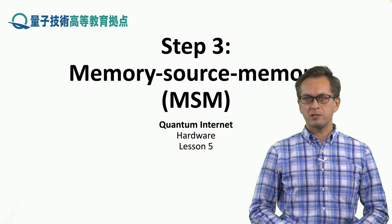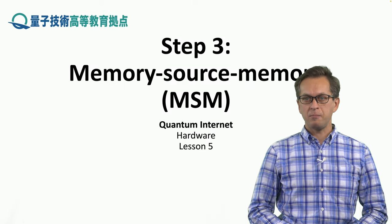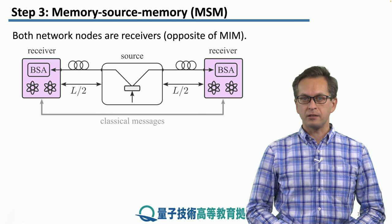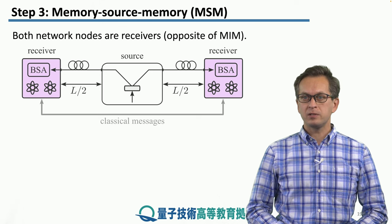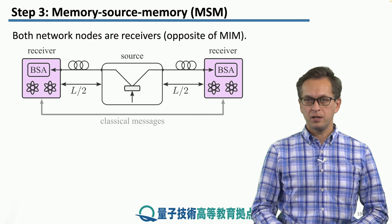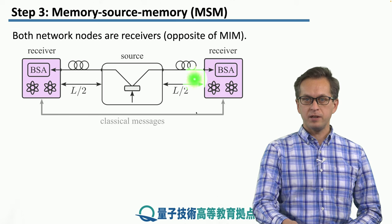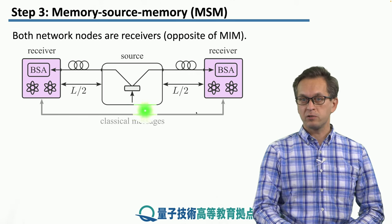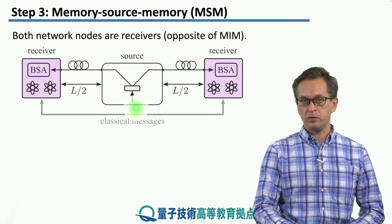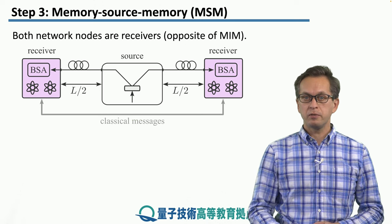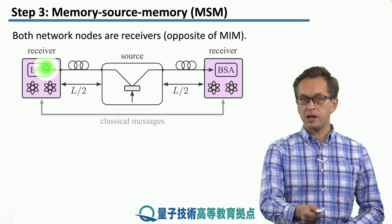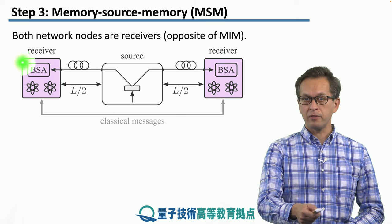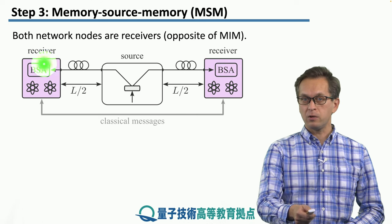Step 3: Memory-Source-Memory, or MSM. This is our third link architecture and it's basically the opposite of MIM architecture. We replace the BSA in the middle that was there in the MIM and replace it with a source of entangled photons. This way, both of the repeaters become receivers, and both are equipped with their local BSA.